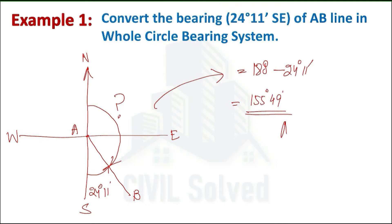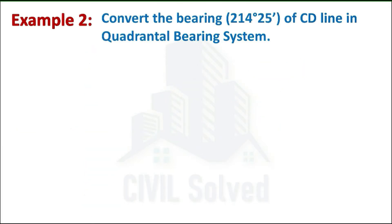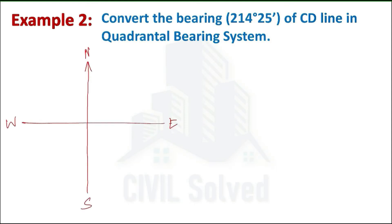Now let's move on to example number two. We have line CD and its bearing is given in the whole circle bearing system. We are asked to convert it into the quadrantal bearing system. Drawing the sketch: in WCB the angle is measured from north and clockwise, so 214 degrees 25 minutes lies over here — this is line CD.